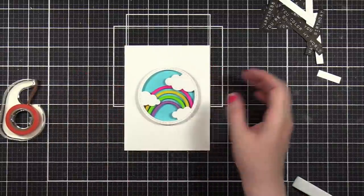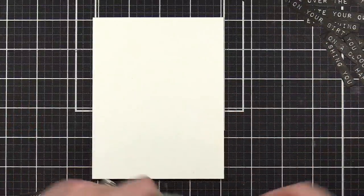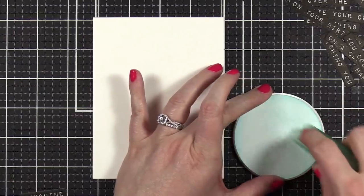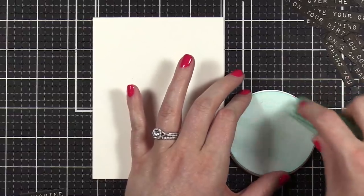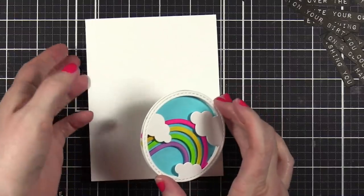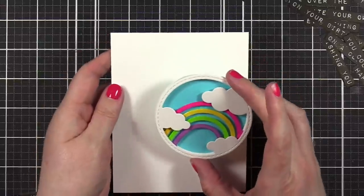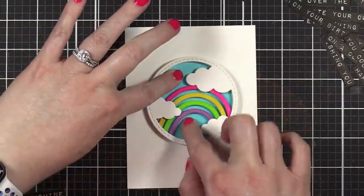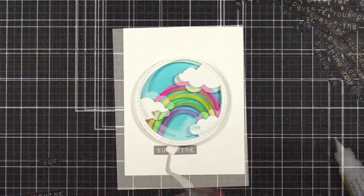I'm gonna try the new Simon Says Stamp dot runner adhesive. We'll see. I'm just gonna put a bunch of adhesive all on the back and directly onto the card. I'm putting it centered but a little bit up from center. Pressing the blue, let's get that to adhere. Perfect!